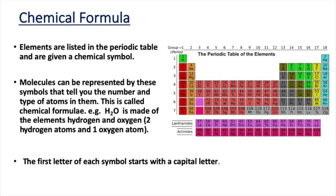When looking at chemical formulae it's important to note that the first letter of every chemical symbol starts with a capital letter. So you can tell how many elements there are just by looking at the number of capital letters you have.